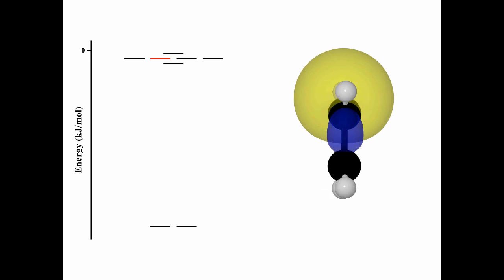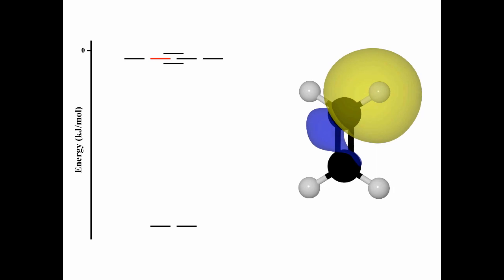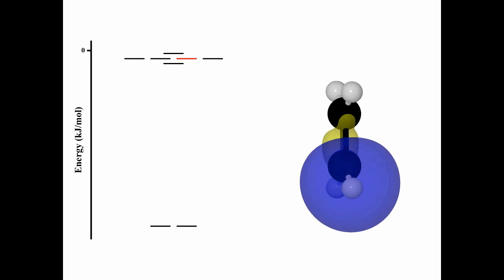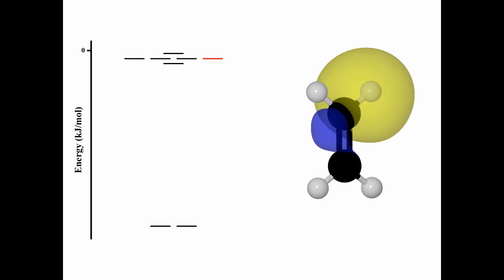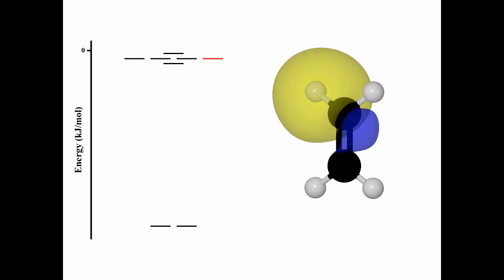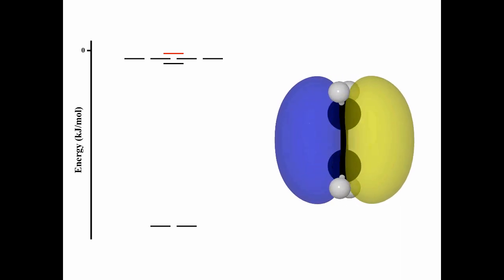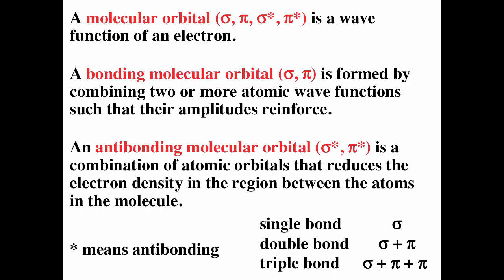The four carbon-hydrogen sigma bonds are degenerate — they have the same energy. Then we have the pi bond for the carbon-carbon bond. Remember: a single bond is typically a sigma bond, a double bond is a sigma and a pi, and for a pi bond the electron density is half above and half below the internuclear axis. A triple bond consists of a sigma, a pi, and another pi.